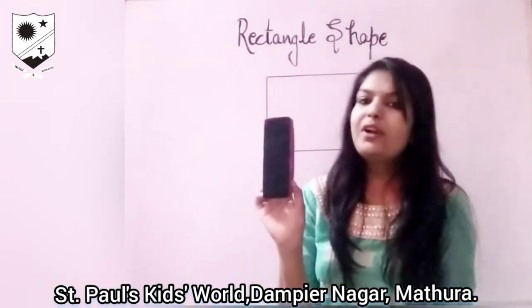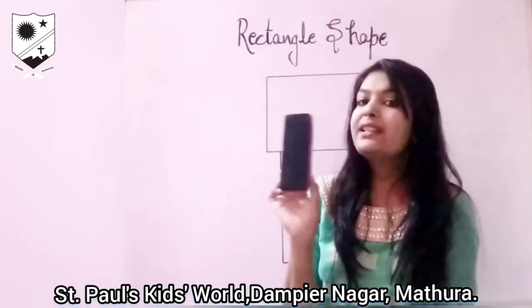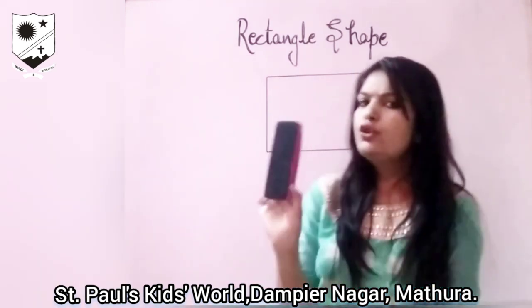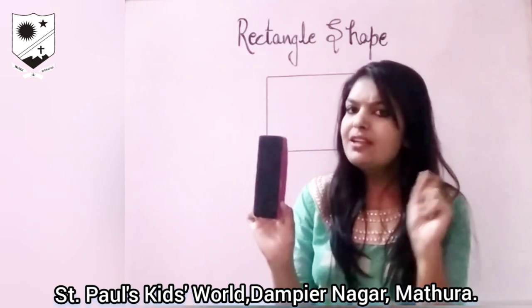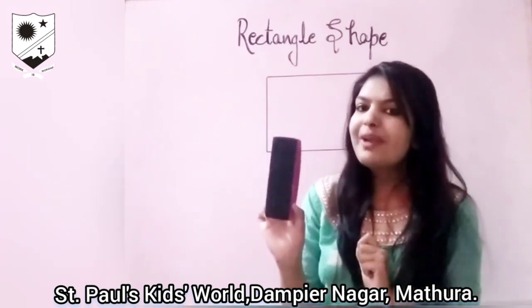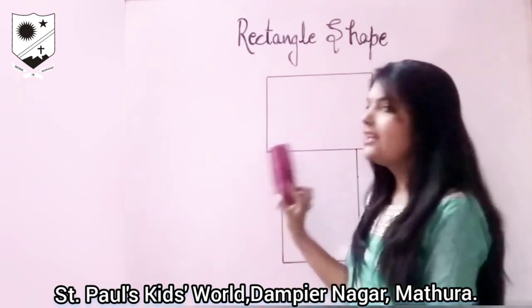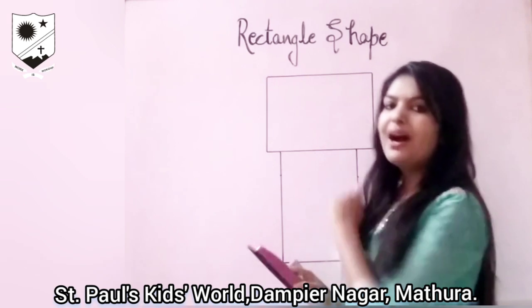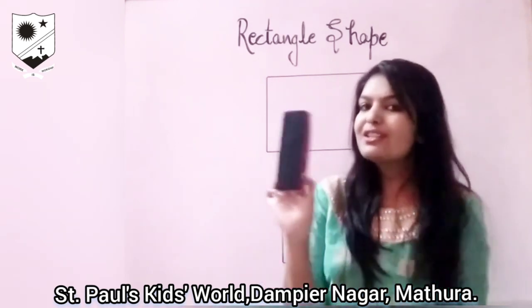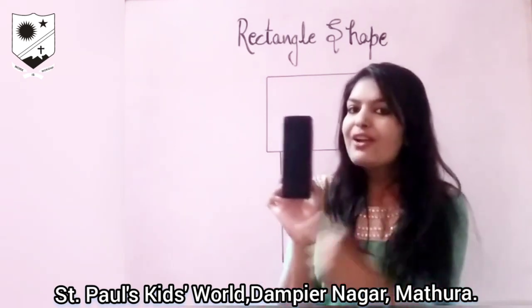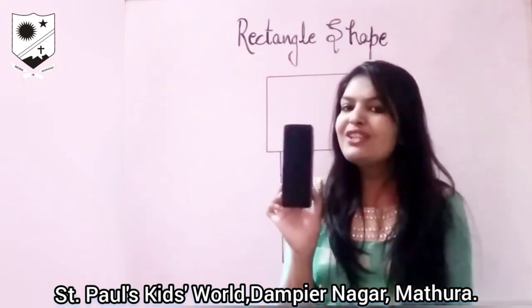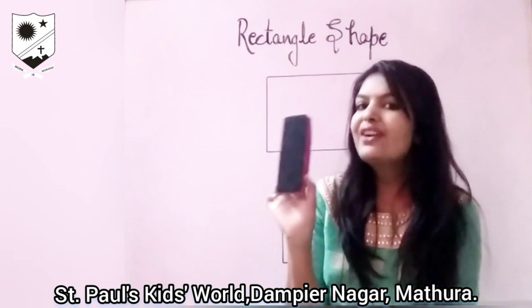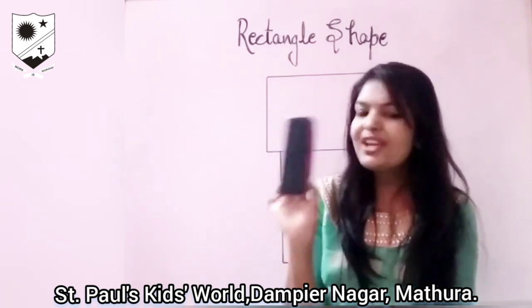What is this? This is a duster. You use an eraser to erase your pencil marks. I use this duster to erase my marker. This is also in rectangle shape. Which shape is this? Rectangle shape.